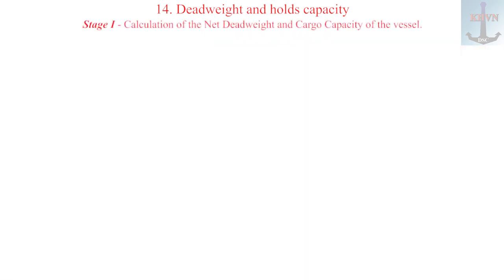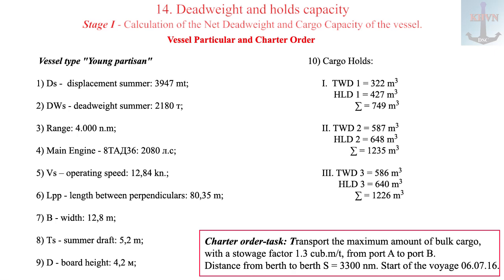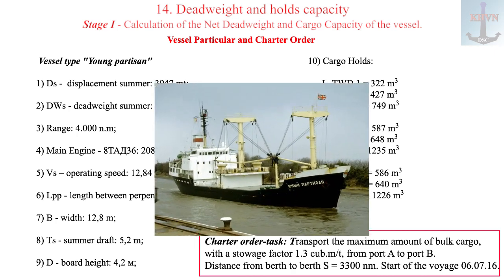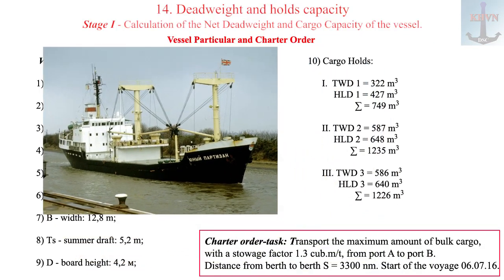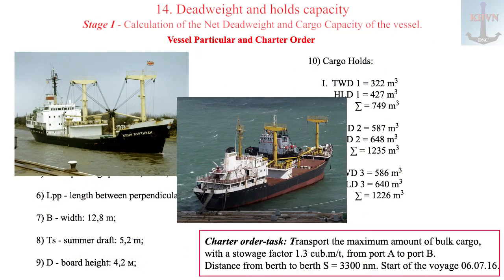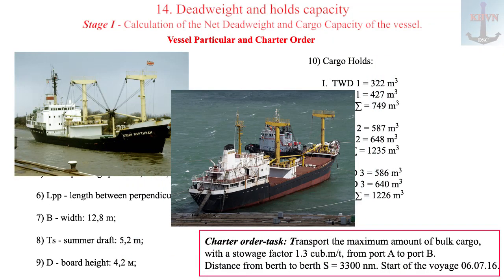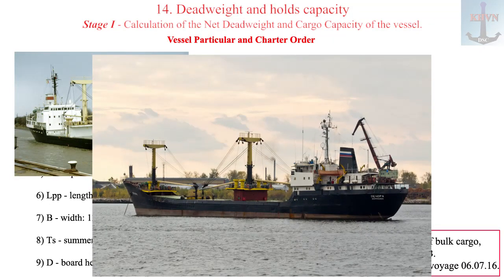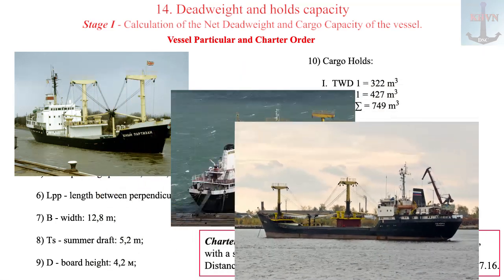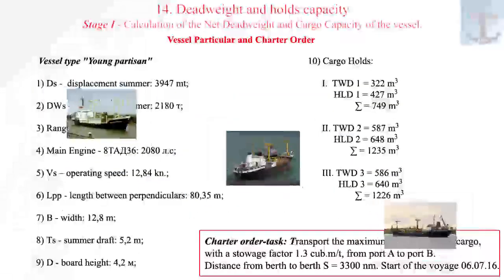Stage IV, calculation of the net deadweight and cargo capacity of the vessel for the voyage. Ship's details Unipartisan is on your screen. For the sake of brevity, I will only mention a few of them. Length 80.35, width 12.8, summer displacement 3947 tons.